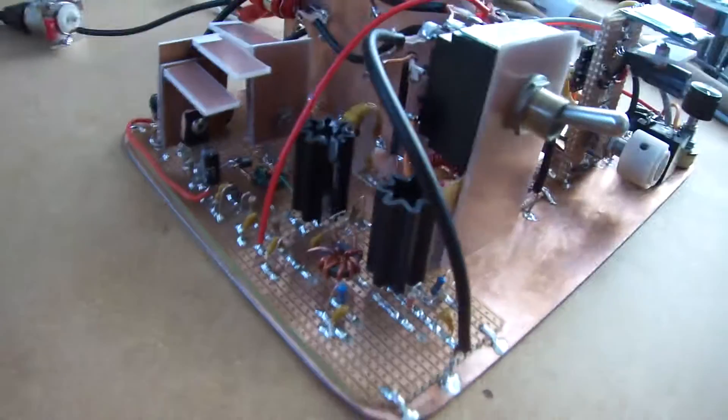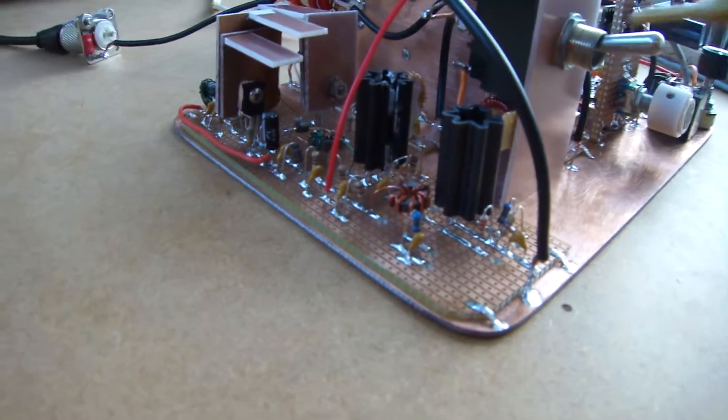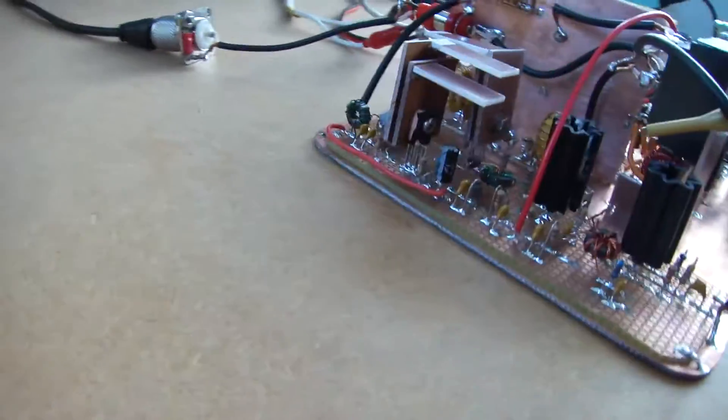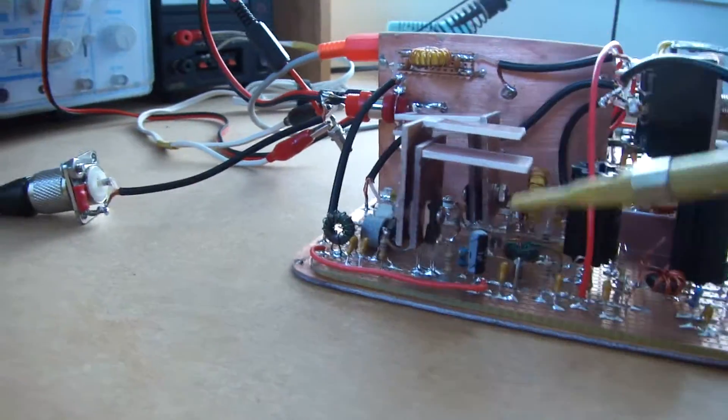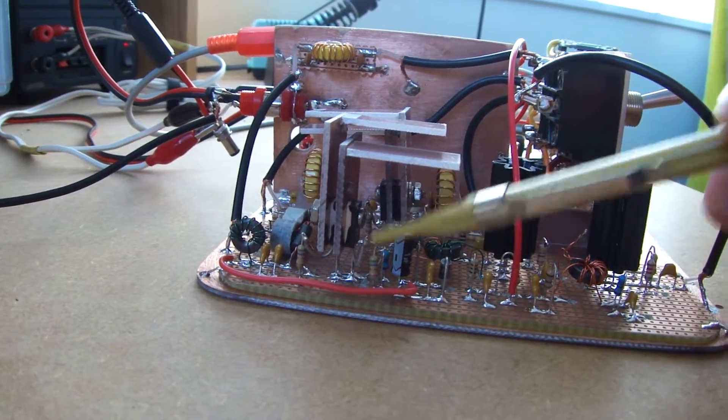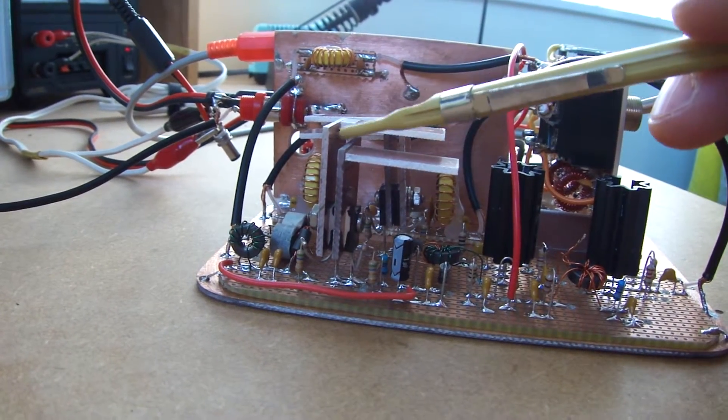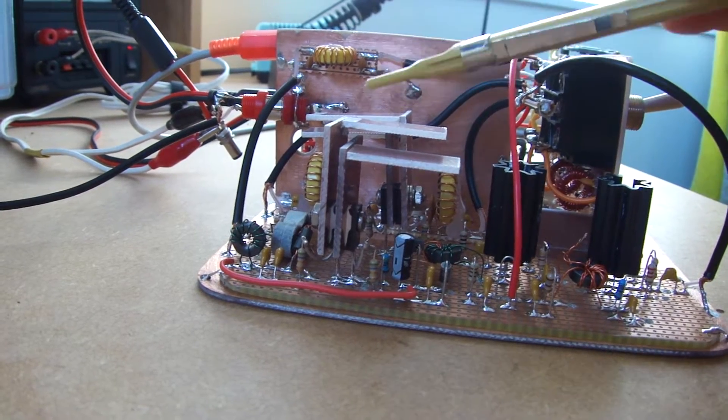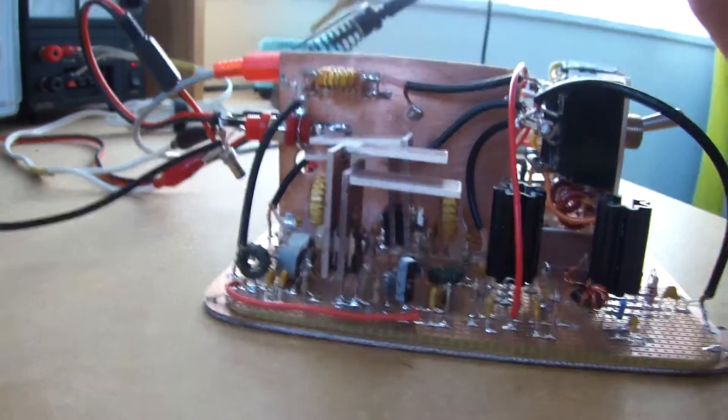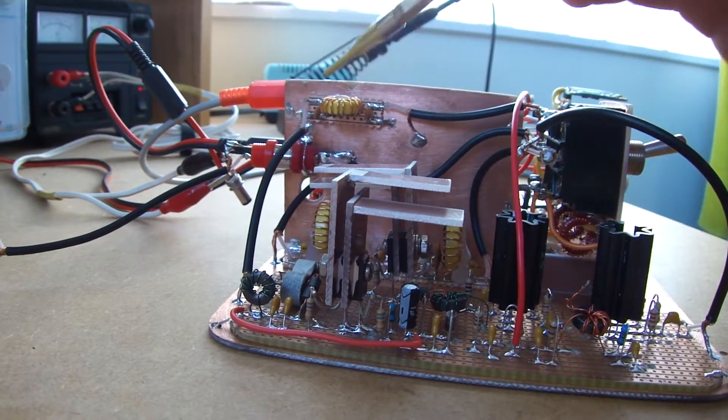So this is my version of a J-Bot. Running two 2N3053s, and then into a dual pair of BD139s, so back-to-back there, with a homemade heat sink, just using some single-sided copper board, and that's working fine. And then back out through just a small filter here.